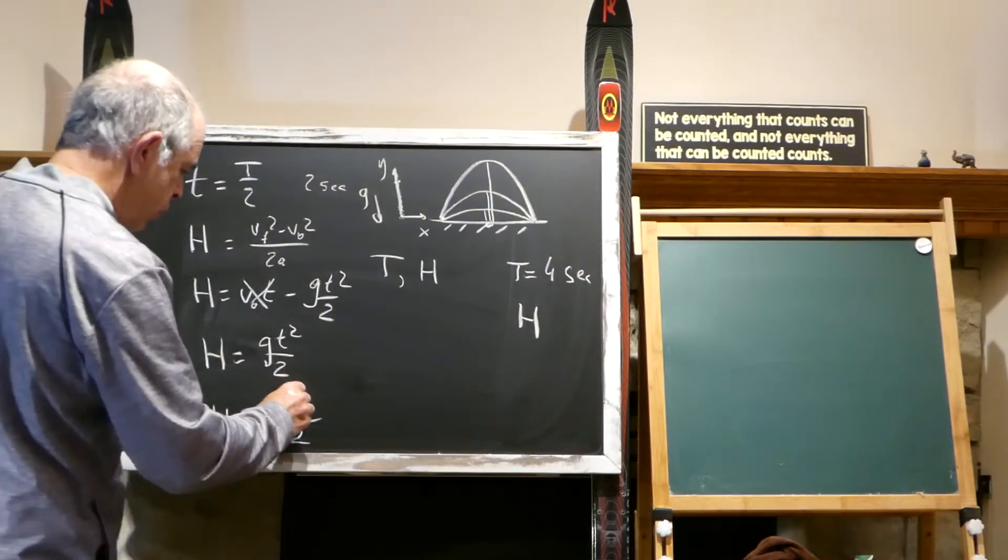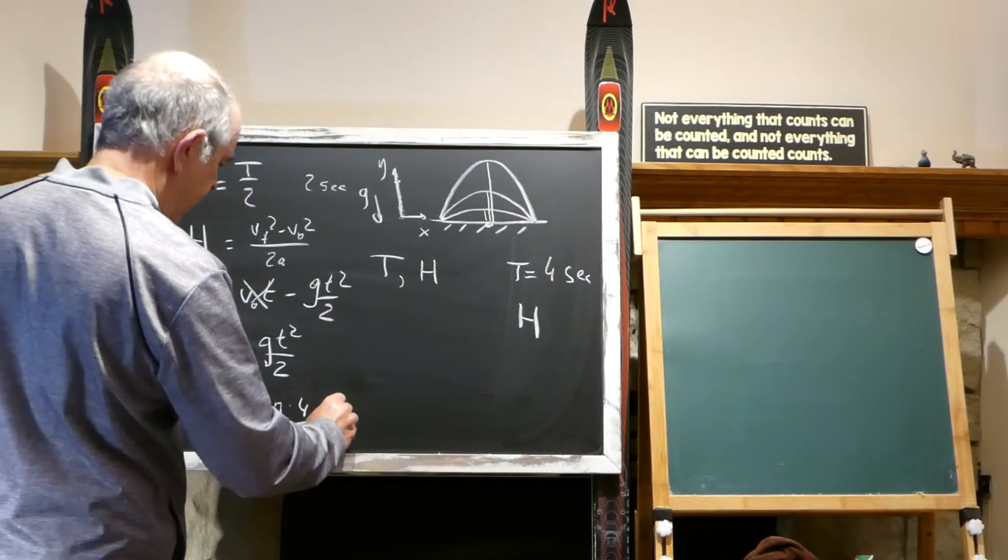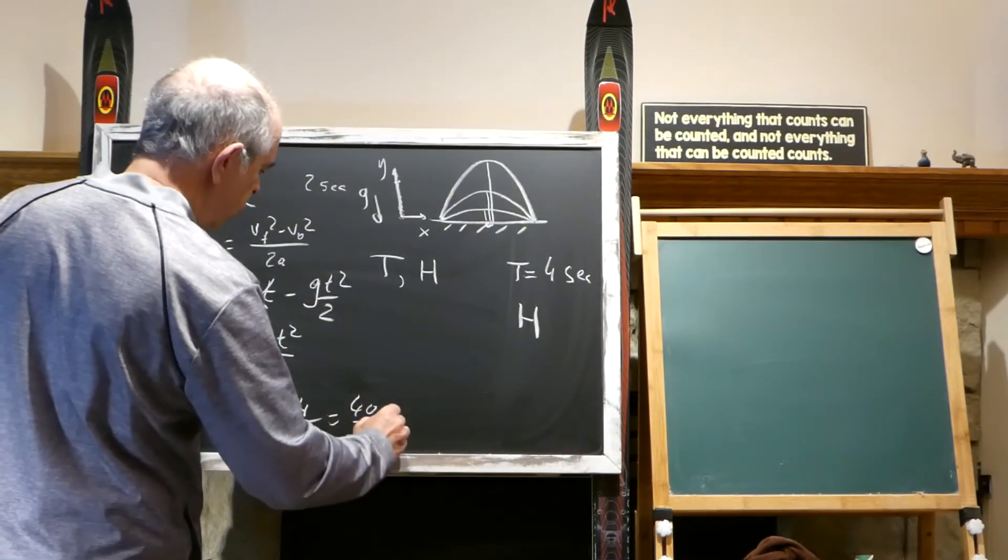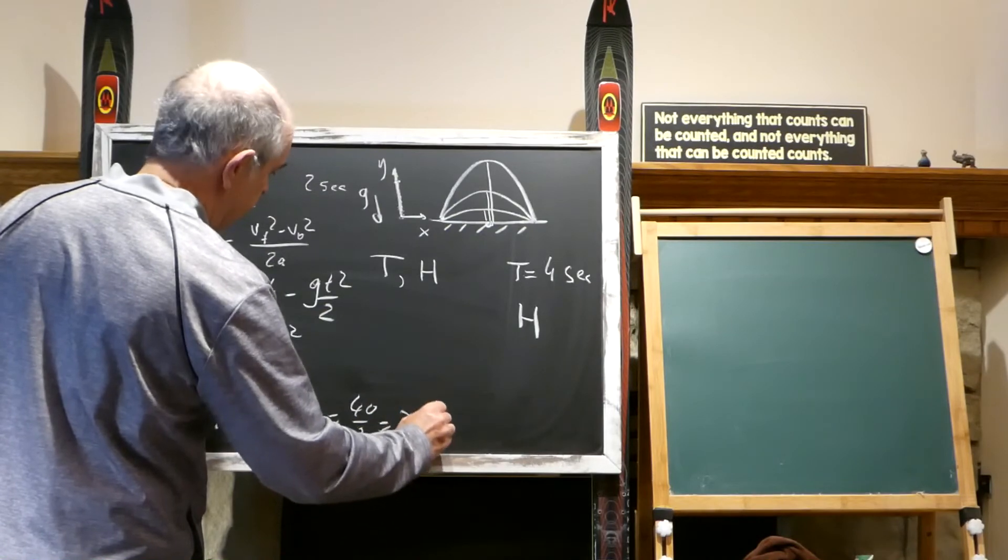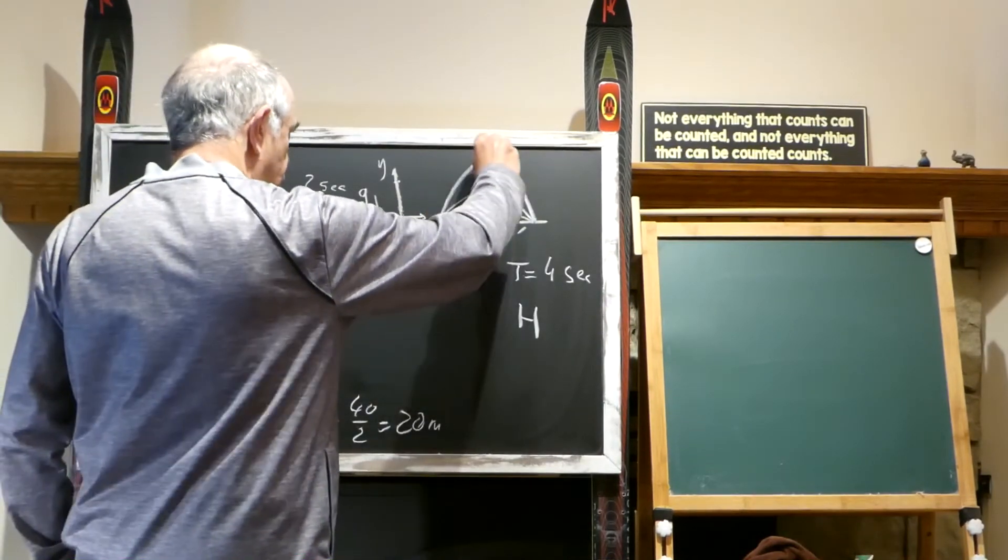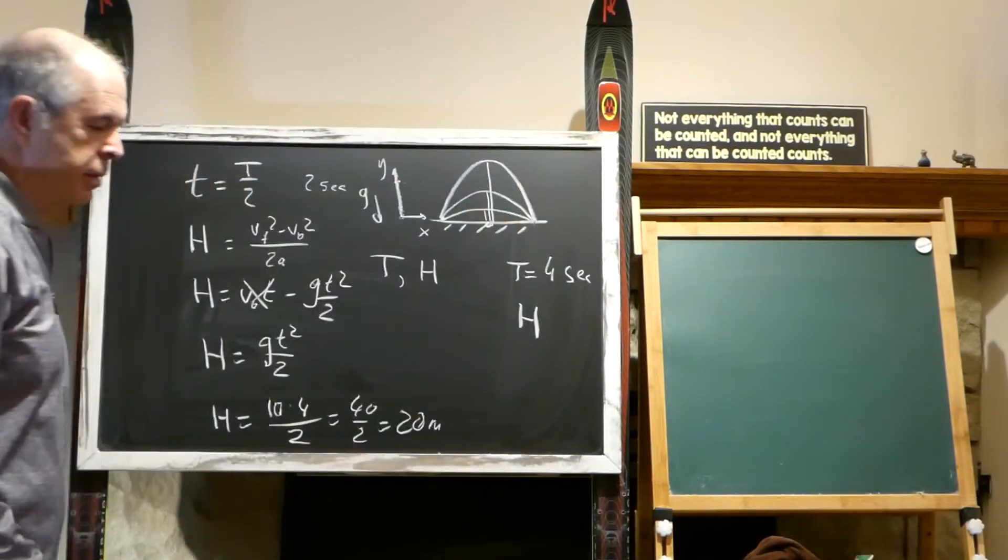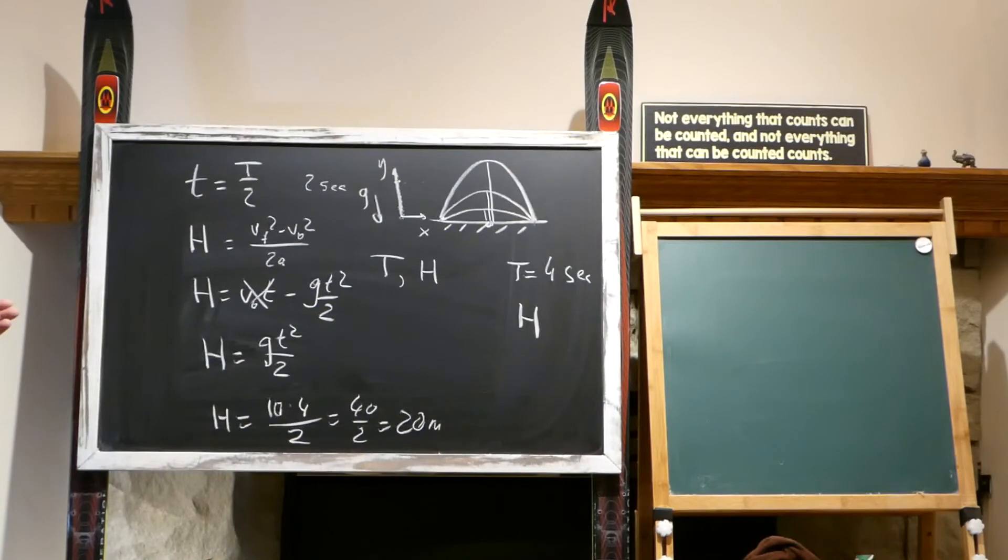And we should respect our teachers. T squared would be 4. It would be 40 divided by 2. It's 20 meters. It's quite high. So it flies for a long time and reaches the height of 20 meters.